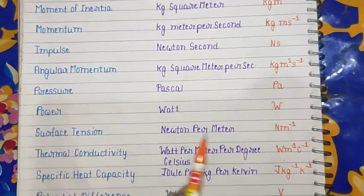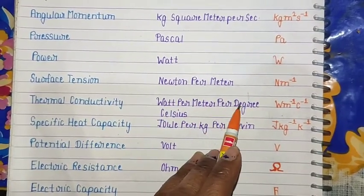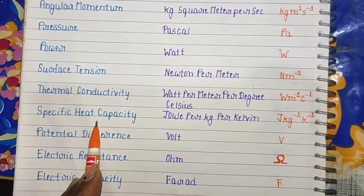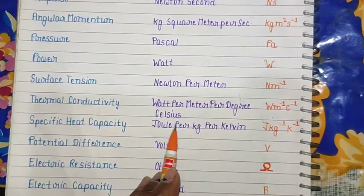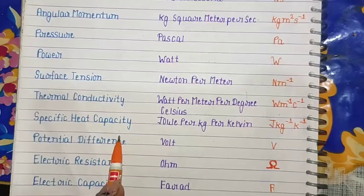Thermal conductivity - watt per meter per degree Celsius (W/m·°C). Specific heat capacity - joule per kilogram per Kelvin (J/kg·K). Potential difference - volt (V). Electric resistance - ohm (Ω). Electric capacity - farad (F).